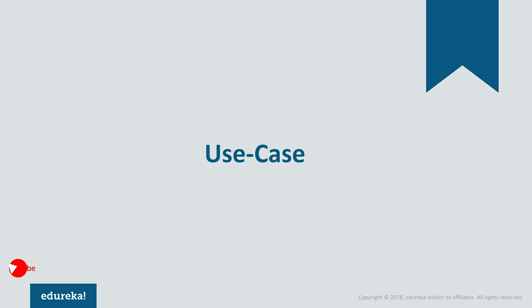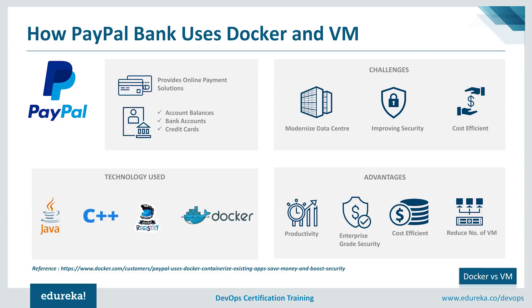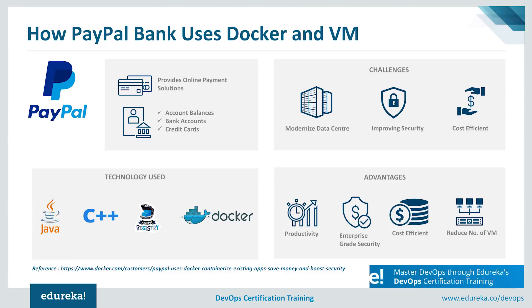Now let's look at a real-life case study of how Docker containers and virtual machines can complement each other: PayPal. PayPal provides online payment solutions through account balances, bank accounts, credit cards, and promotional financing. Today, PayPal leverages OpenStack for their private clouds and runs more than 100,000 virtual machines. One of PayPal's biggest goals was to modernize their data center infrastructure — making it more on-demand, improving security, meeting compliance regulations, and making everything cost-efficient.